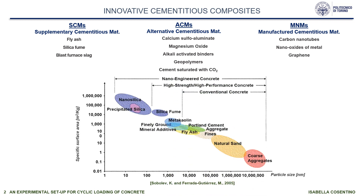The graph shows the particle size and the specific surface area for concrete materials. Nano-engineered and high-performance concrete are located at the top left of the graph because their particle size is very small and their specific surface area is very large compared to conventional concrete. This means better performance compared to conventional materials. Nanotechnology can change the world of concrete.